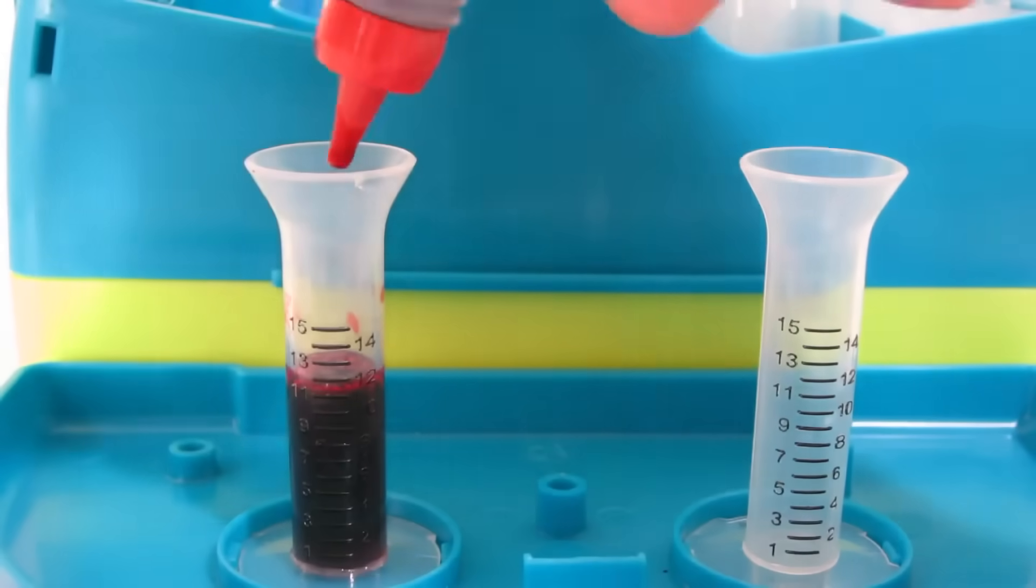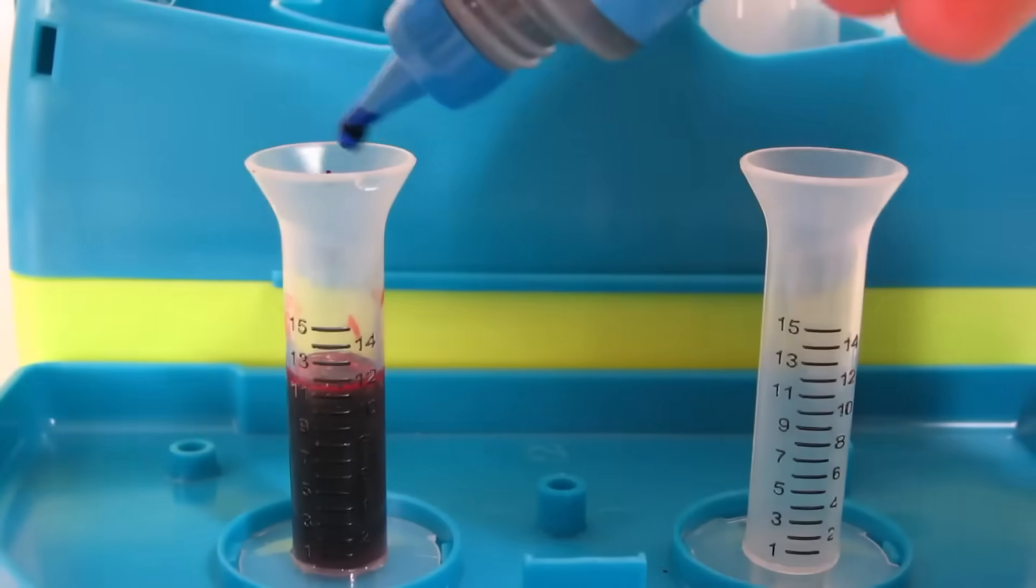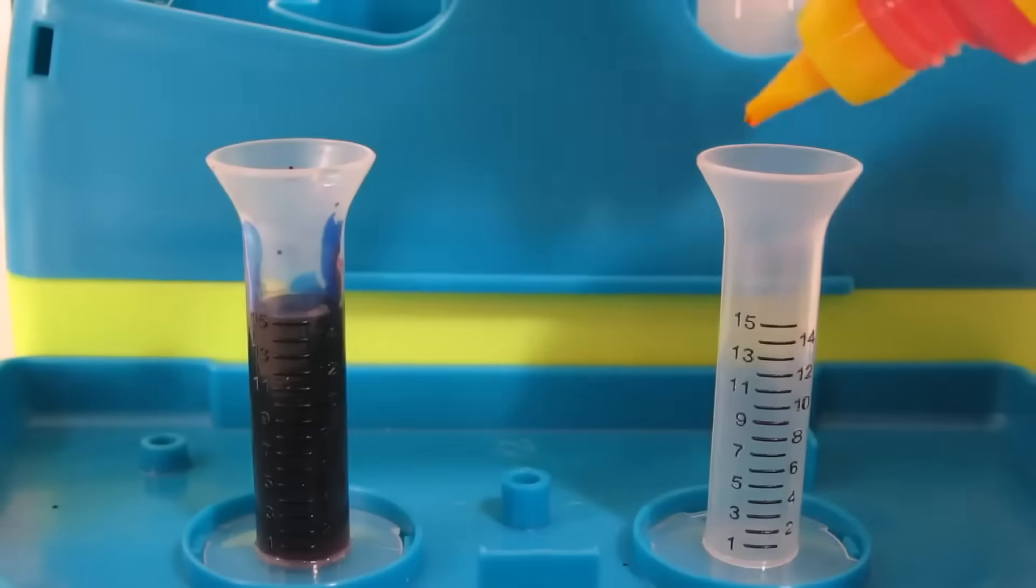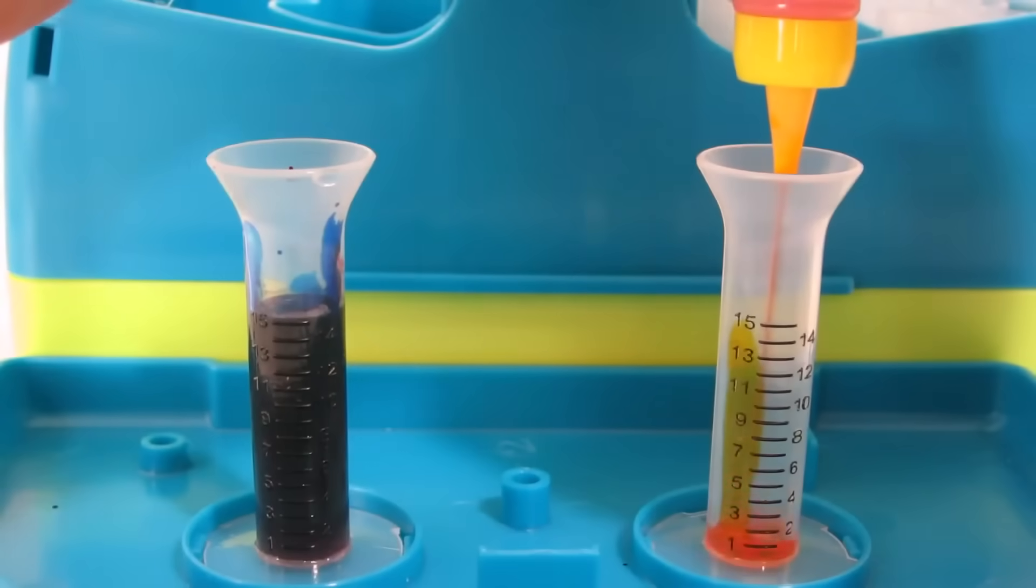We have 12 parts red. Now we need 3 parts blue or just fill it to 15. Now let's add 15 parts of yellow to the next tube. This one's easy.